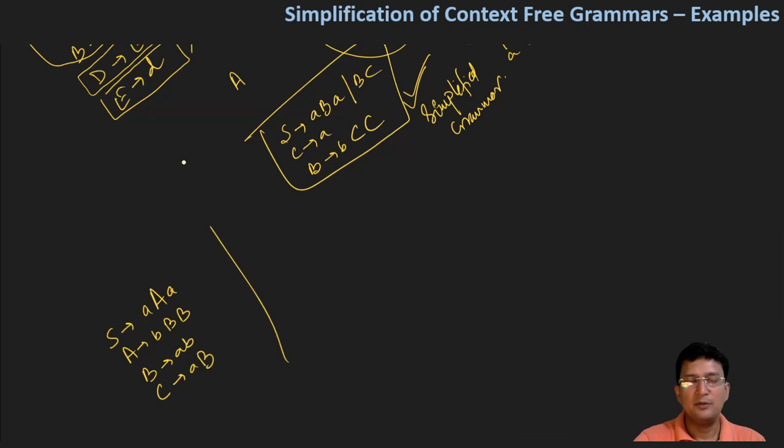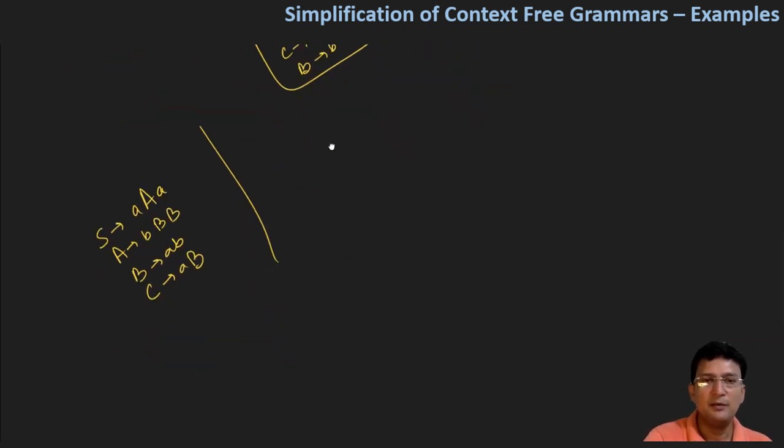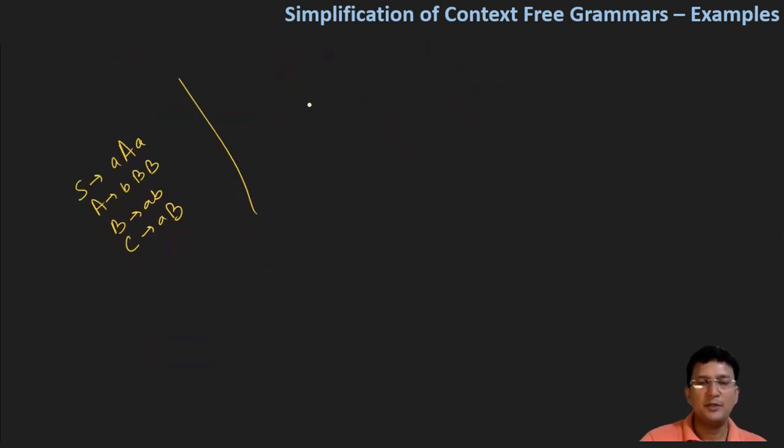Now let's see which are the valid productions. From this expansion: S produces capital A and small a. A produces small b, capital B, and capital B. B produces AB. S is leading to terminal symbols, A is leading to terminal symbols, and B is leading to terminal symbols.